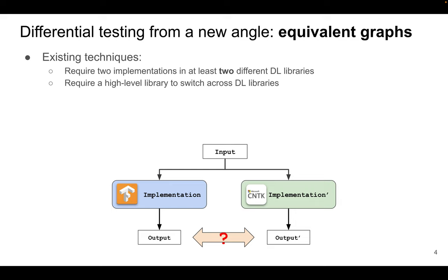To utilize differential testing to test deep learning libraries, existing techniques test a pair of deep learning libraries to cross-check two implementations of the same functionality. However, there are two limitations. First, those techniques require at least two implementations in different deep learning libraries, which is often unavailable for many deep learning software functionalities. For many functionalities that only exist in one library, existing techniques cannot test them.